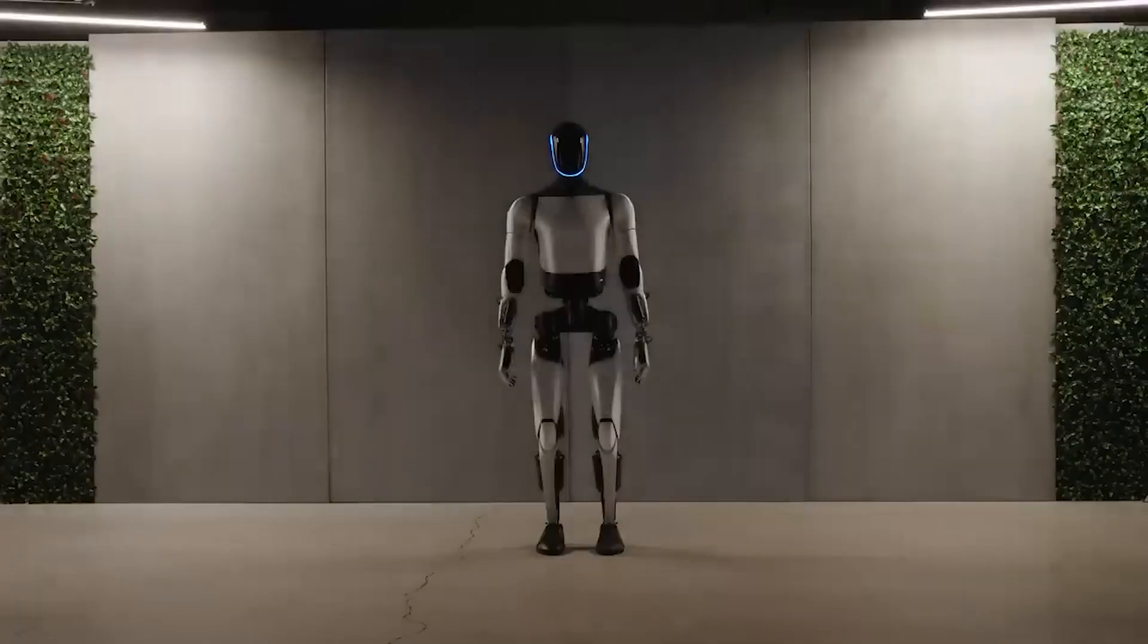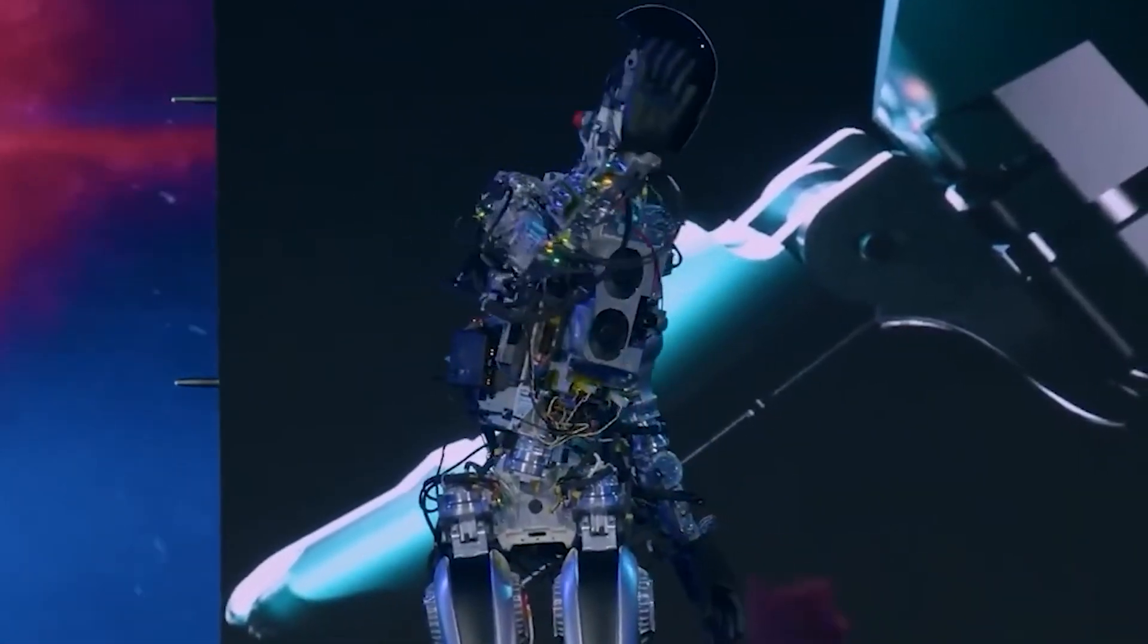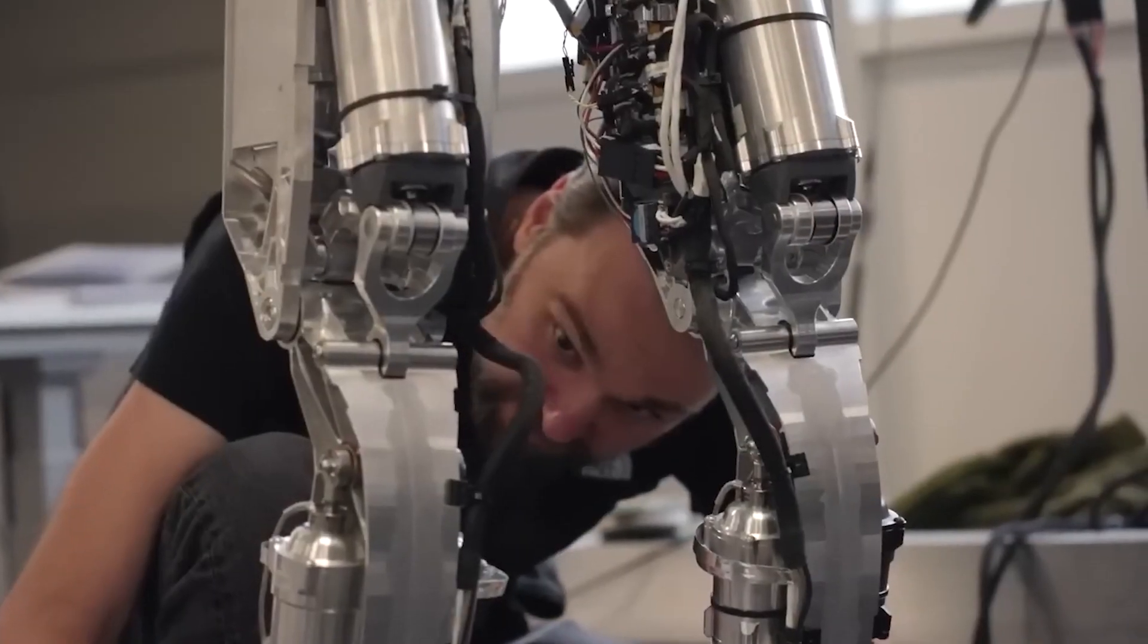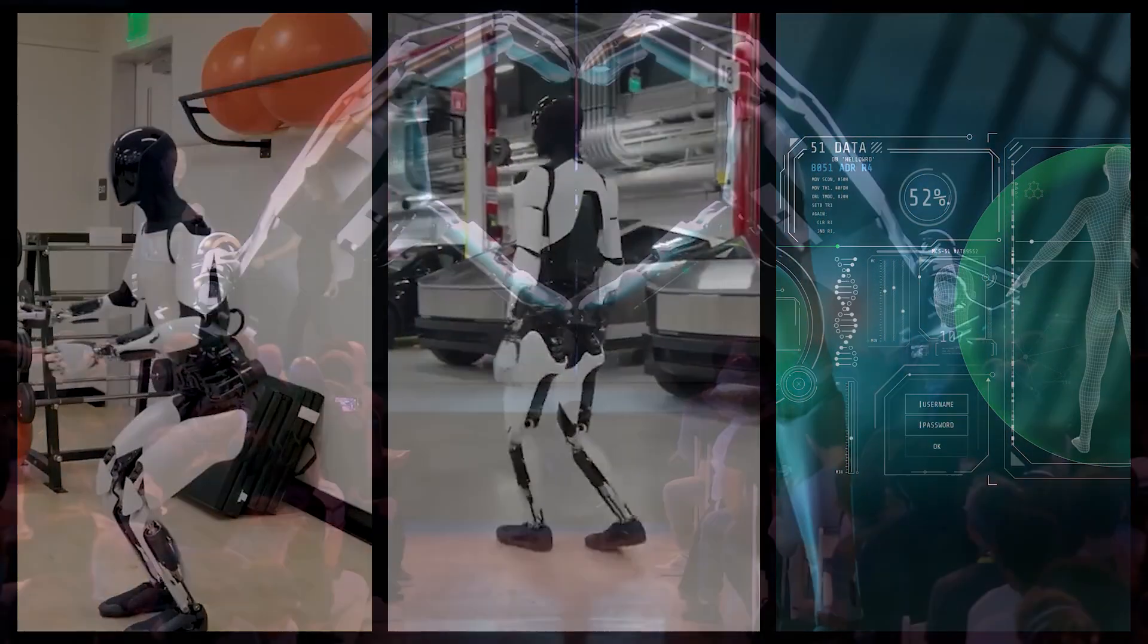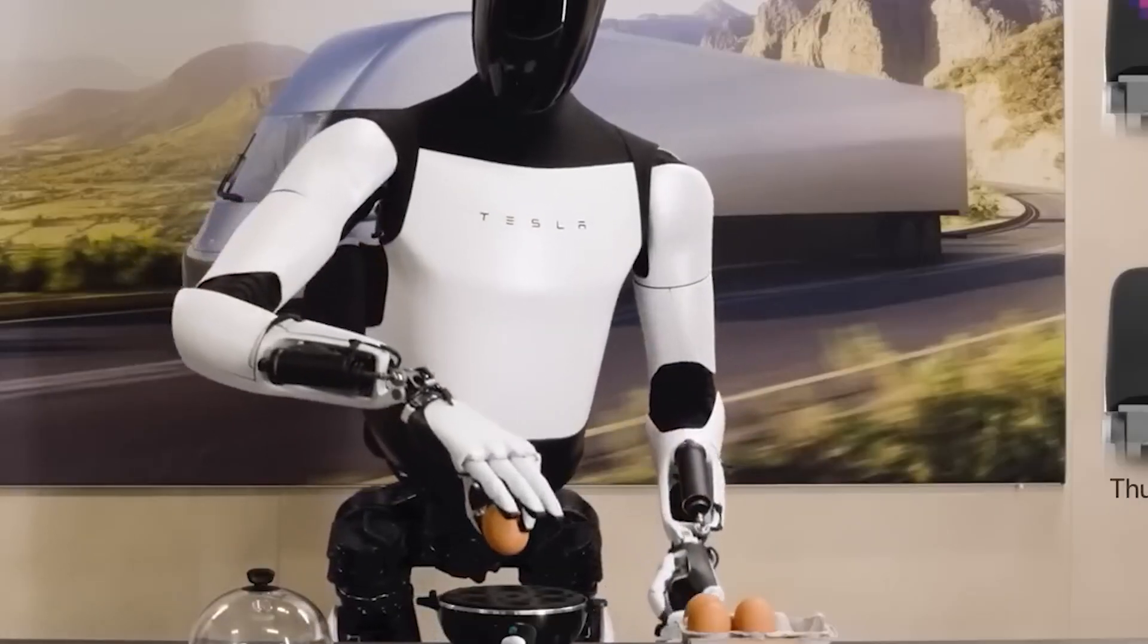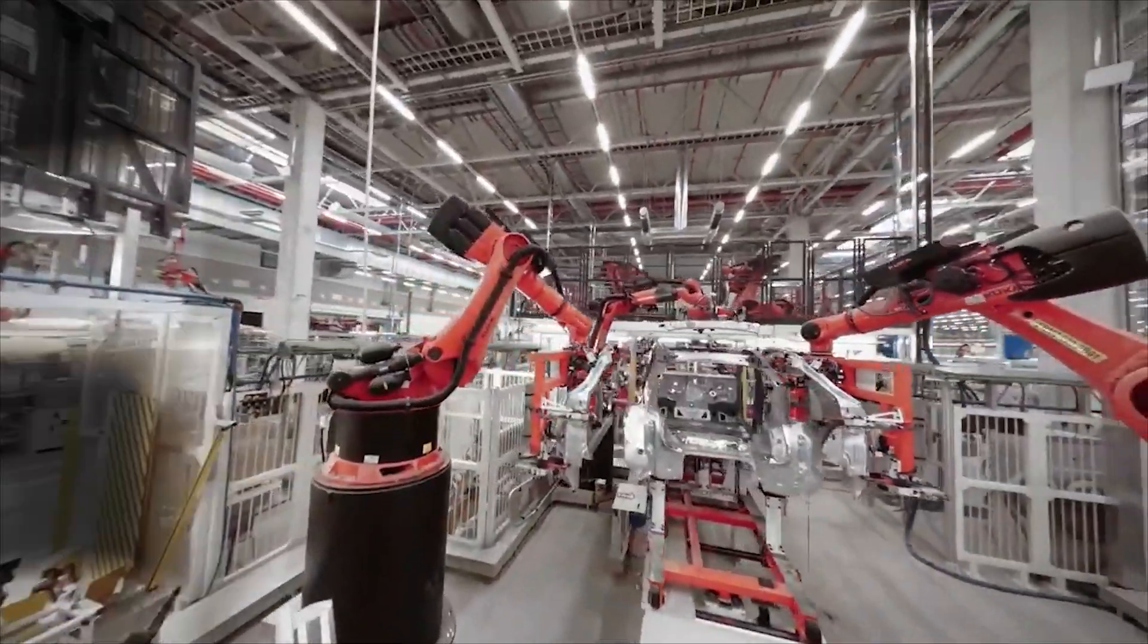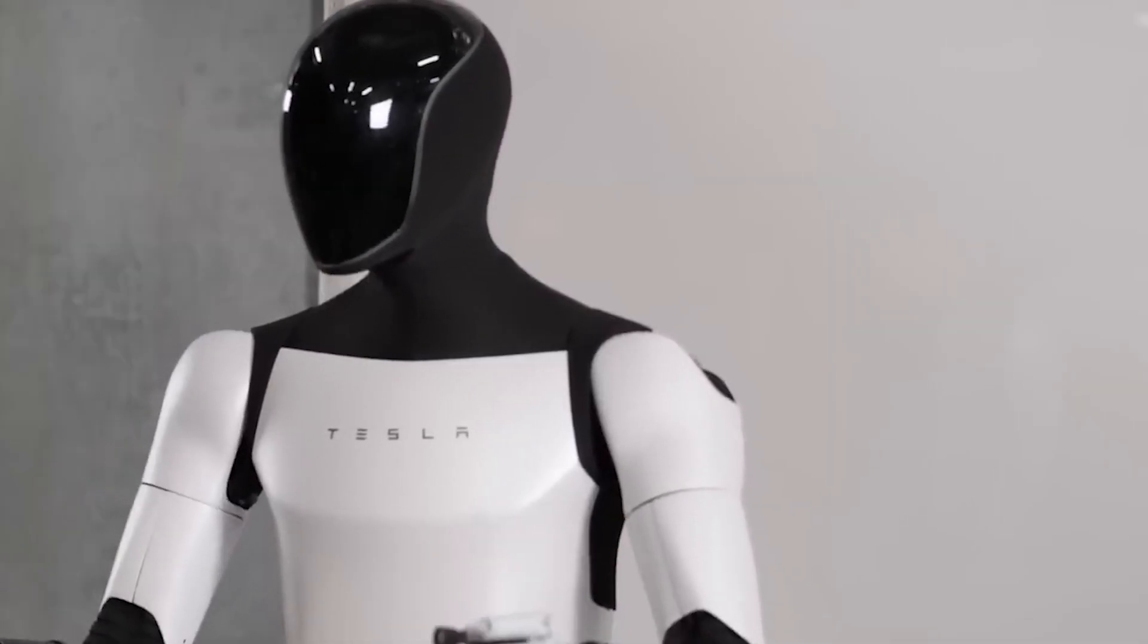In conclusion, Tesla's Optimus Robot Gen 2 represents a paradigm shift in the evolution of robotics. The rapid progress from a skeletal prototype to a self-learning, dexterous humanoid robot showcases Tesla's commitment to pushing the boundaries of innovation. The unique combination of machine learning, biodexterity, and autonomous learning positions Optimus Robot as a formidable player in the robotics industry. While financial implications and market potential offer intriguing prospects, it is the limitless applications and the potential for Optimus Robots to become an integral part of our daily lives that captivates the imagination. As Tesla continues to redefine industries beyond electric vehicles, the Optimus Robot stands as a testament to the company's relentless pursuit of technological excellence.